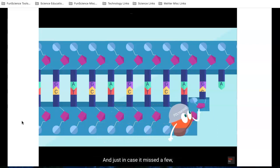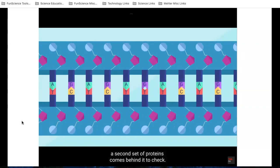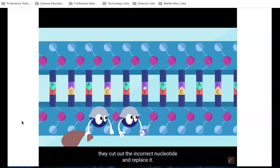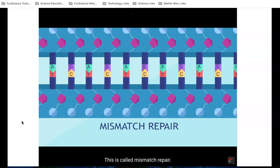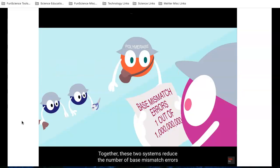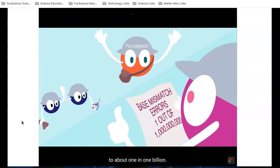The enzyme catches most of these right away and cuts off a few nucleotides and replaces them with the correct ones. And just in case it missed a few, a second set of proteins comes behind it to check. If they find a mismatch, they cut out the incorrect nucleotide and replace it. This is called mismatch repair. Together, these two systems reduce the number of base mismatch errors to about one in one billion.